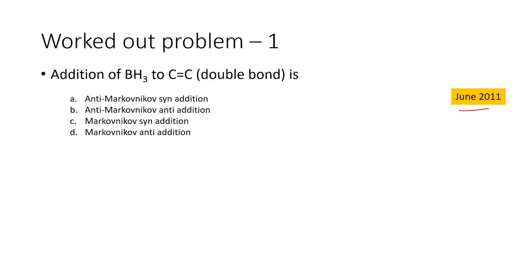The addition of BH3 to a carbon-carbon double bond — there are four options given. One: it is anti-Markovnikov syn-addition. The second option is anti-Markovnikov anti-addition. The third one is Markovnikov addition but it is a syn one. And the last one is Markovnikov anti-addition.